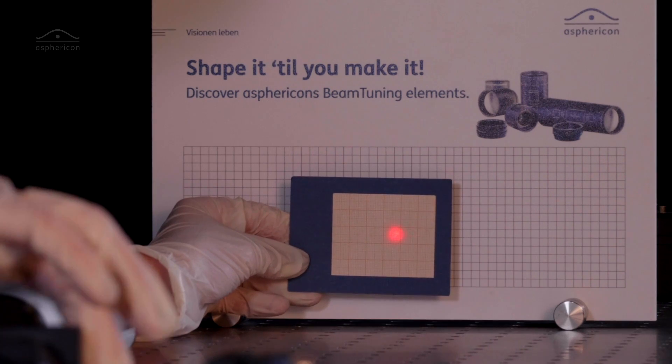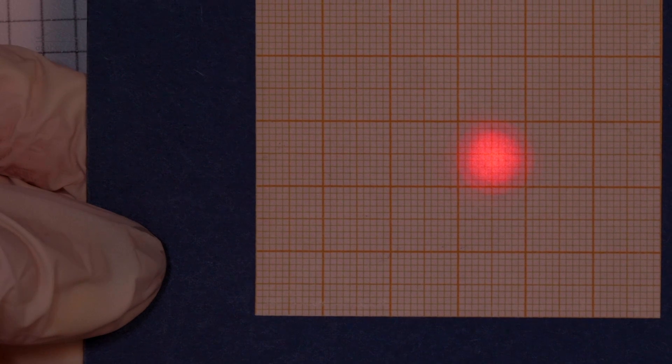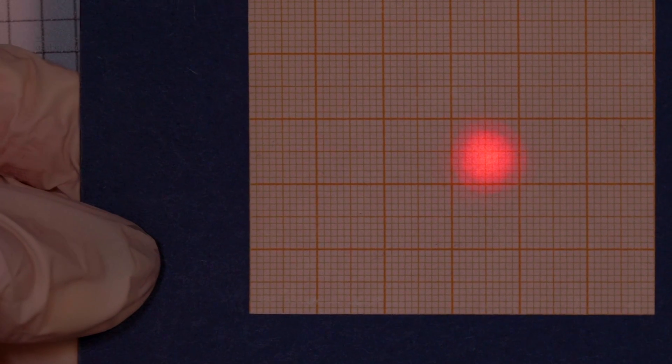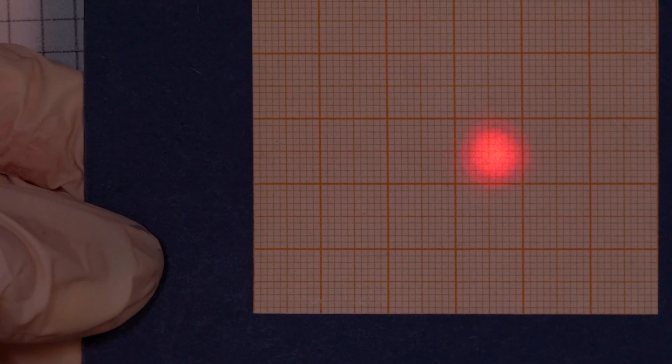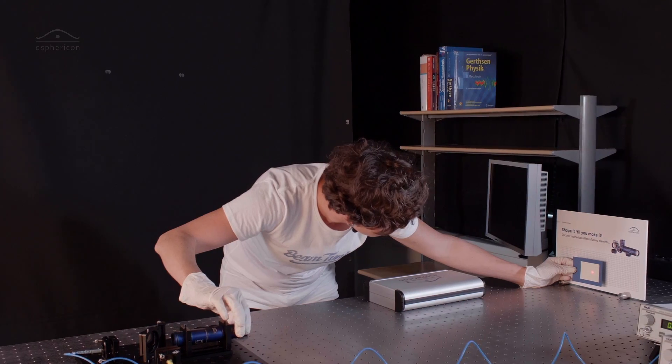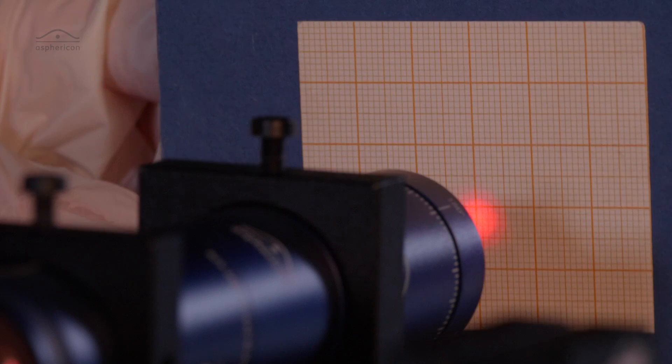So let's see what happens if we turn it. Can you see a change? It's getting smaller. And I would say that even with the naked eye, you can see that the beam itself looks nicer now. Now I have it about 10 millimeters here and about 10 millimeters here.